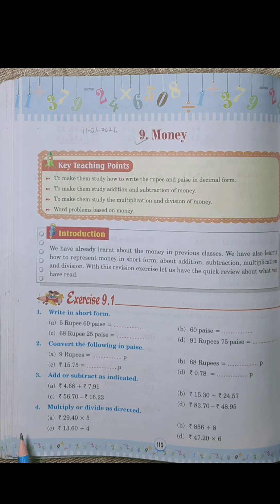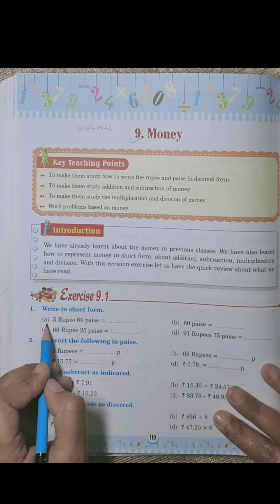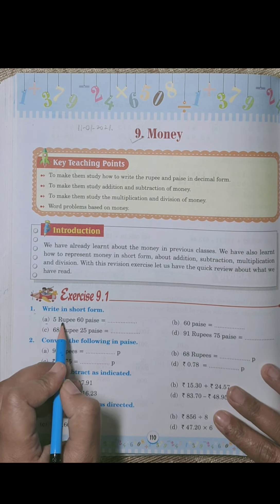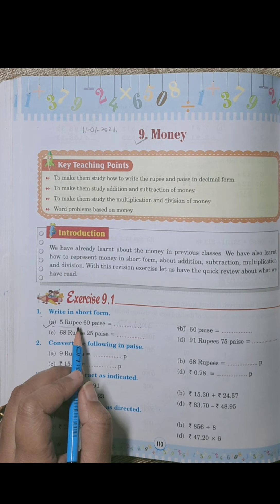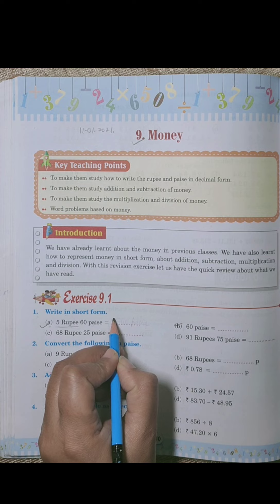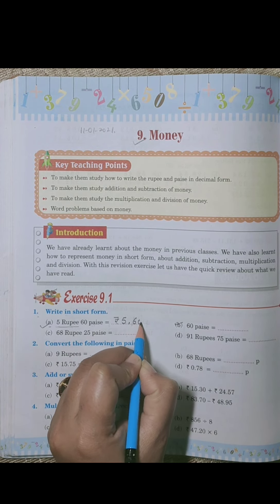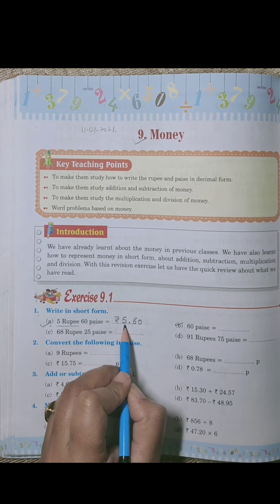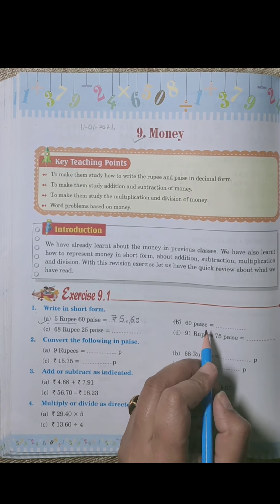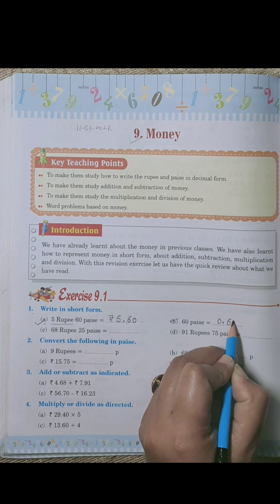In the first exercise let's revise the previous class topic. Exercise 9.1, write in short form: a is five rupees sixty paise. In short form we can write it as rupees 5.60, which means five rupees sixty paise. Then part b, sixty paise, we can write it as 0.60 rupees.